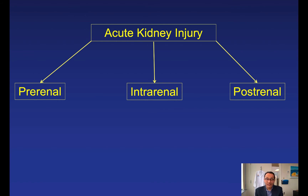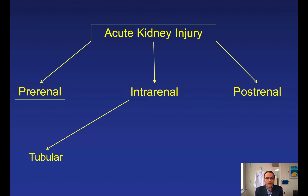Intrarenal causes can be understood by thinking about the four structures within the kidney. First, tubules — this is ATN, usually due to an insult such as shock, severe hypotension, ischemia, contrast dye, sepsis, hemoglobinuria, myoglobinuria, or medications like aminoglycosides. Clues include a normalized BUN-to-creatinine ratio, muddy brown granular tubular casts on urinalysis, FENa greater than 3%, and FEurea greater than 50% if on diuretics. Patients often improve before needing dialysis, but nephrology should be involved early.